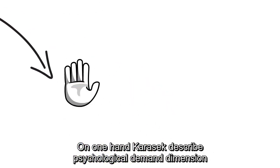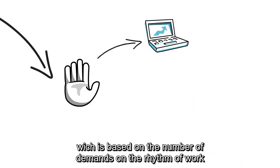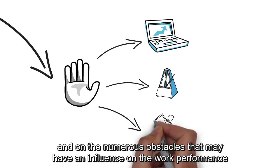On one hand, Karasek describes psychological demand dimension as mental work, which is based on the number of demands, on the rhythm of work, and on the numerous obstacles that may have an influence on the work performance.